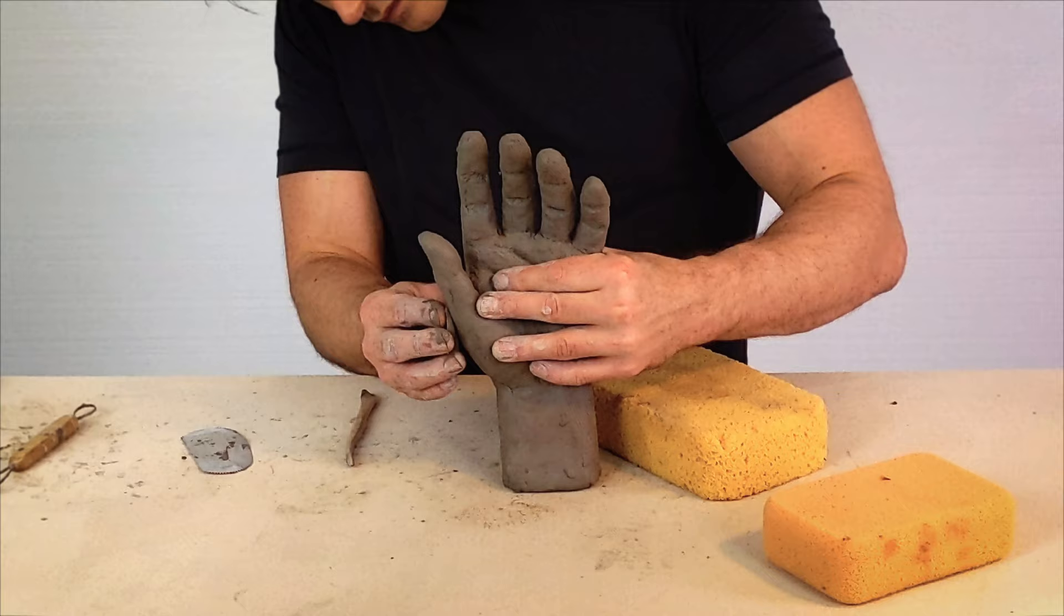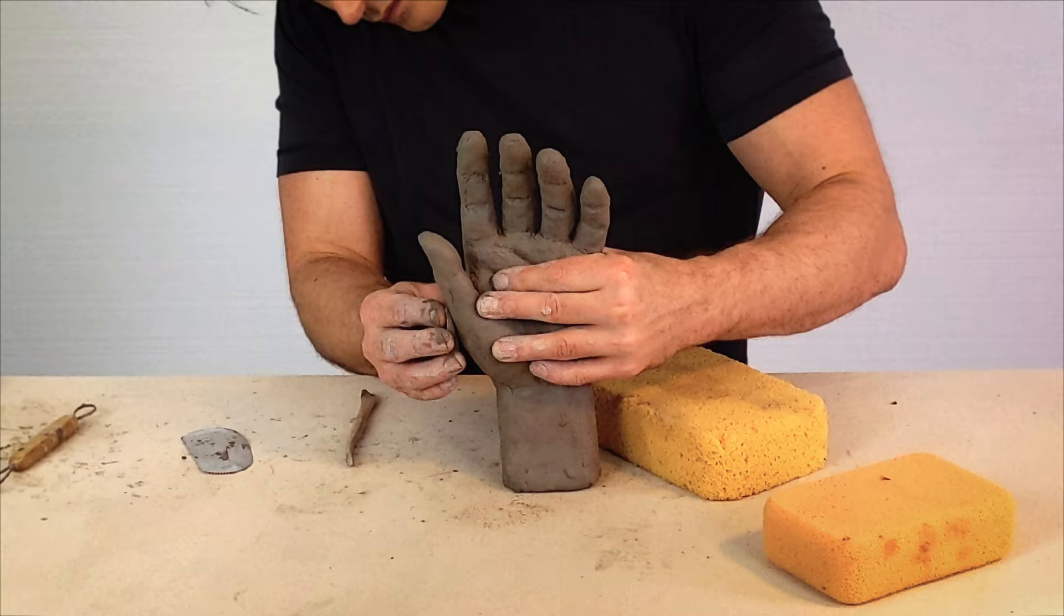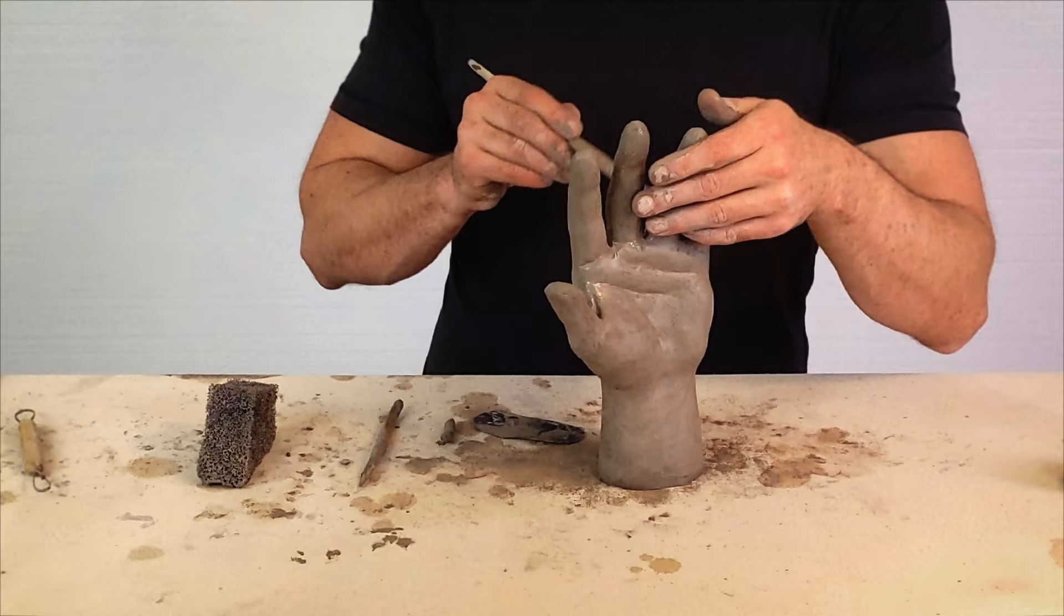Build up the tendons of the back of the hand. Make any small additions or subtractions to the primary structures, as may seem necessary. Then do a unifying pass, with abrasives, sponges, and or brushes to bring everything together.